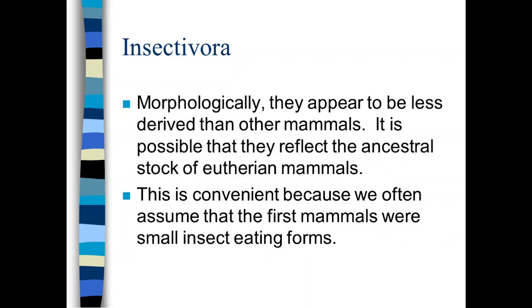Morphologically, they appear to be less derived than other mammals, and that again is probably because of their plesiomorphic condition. They are more basal. They are essentially the root from which all of the other modern mammals have evolved.